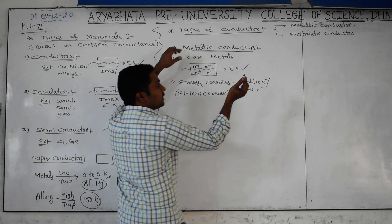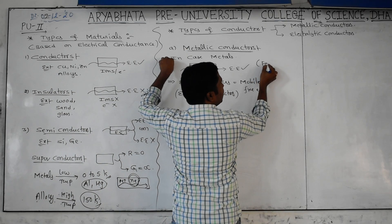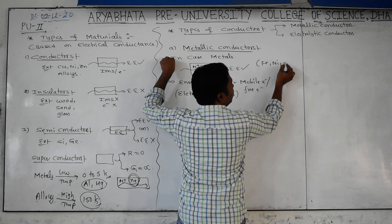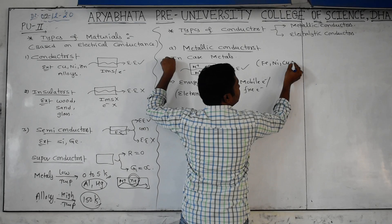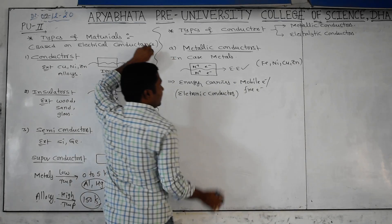Examples of metallic conductors include iron, nickel, copper, and zinc - all fall under this category.